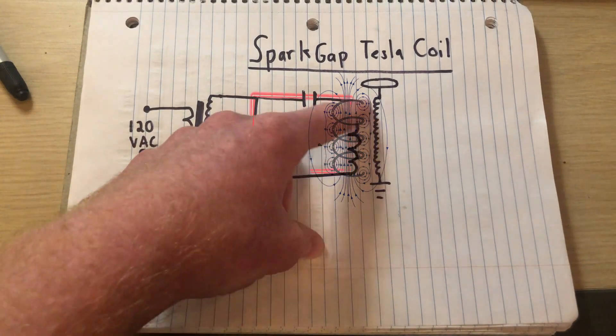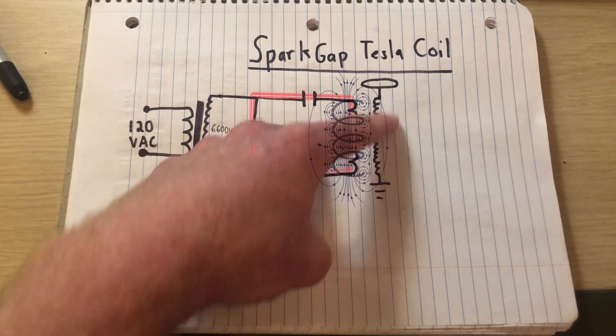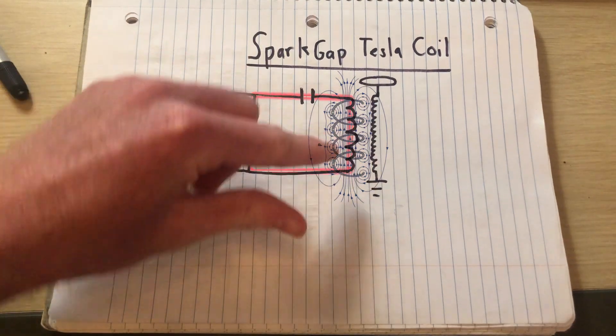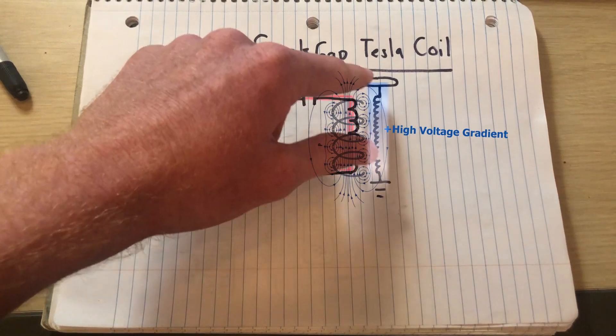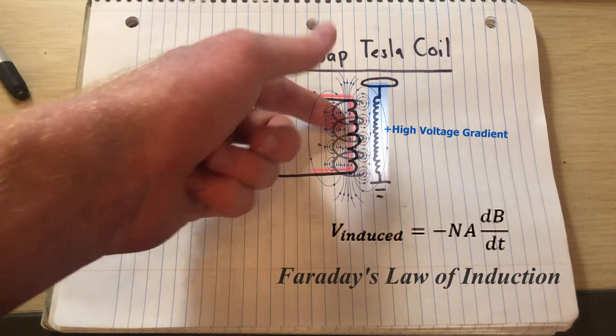So now that there's a changing magnetic field in proximity to the secondary coil, a voltage is induced across the secondary coil, and that's in accordance with Faraday's law of induction.